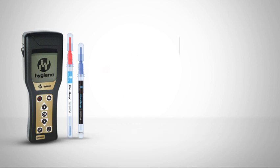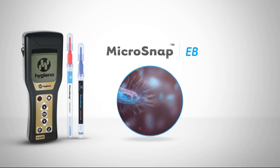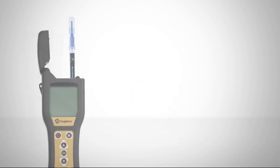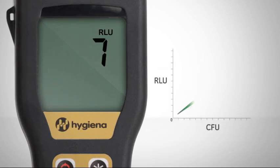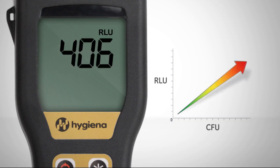Microsnap EB is a rapid bioluminogenic test for detection and enumeration of Enterobacteria ACA. Together, Microsnap EB and the Ensure Luminometer detect Enterobacteria ACA present in a sample. Test results are delivered in 15 seconds and are measured in Relative Light Units, or RLUs. The greater the amount of bacteria, the higher the RLU number and the higher the CFU count.